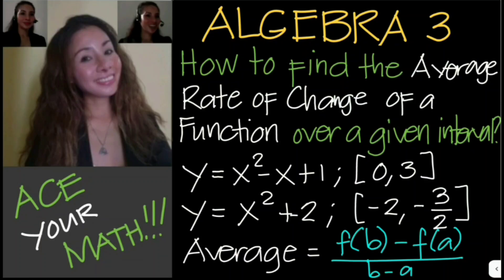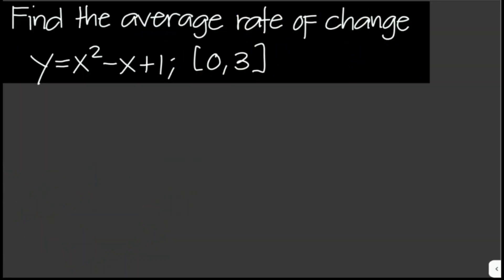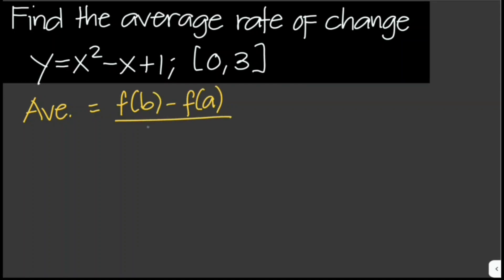Let's solve some sample problems. Find the average rate of change of the given function y equals x squared minus x plus 1 at interval 0, 3. Using the equation, the average is equal to f of b minus f of a over b minus a.